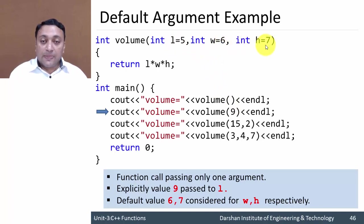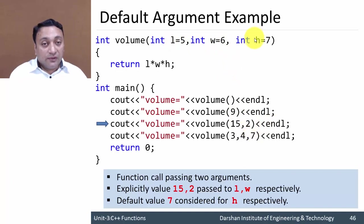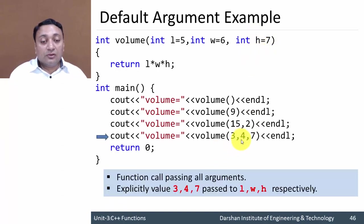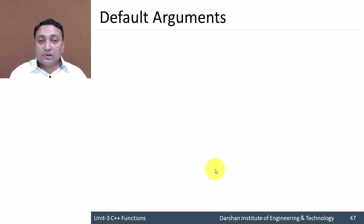In the third function call with arguments 15 and 2, L becomes 15, W becomes 2, and H uses the default value 7. In the fourth call where all three arguments are given, all defaults are overwritten: L=3, W=4, H=7. This is how default arguments work — provided values overwrite defaults from left to right.